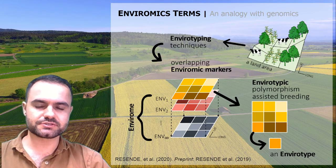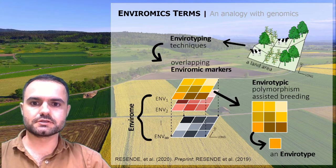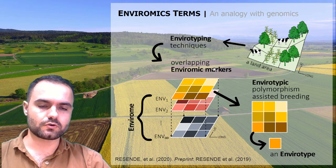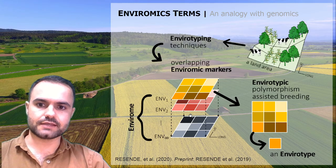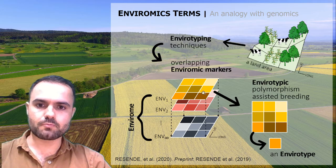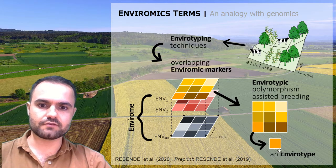Let me introduce some enviromics terms. We have a landscape, and from some pixels of this landscape we collect enviromics markers — environmental co-variables — by a process called envirotyping. The set of these environmental co-variables is the envirome. A single enviromic marker represents envirotyping polymorphism assisting breeding, and a single pixel represents an envirotype.